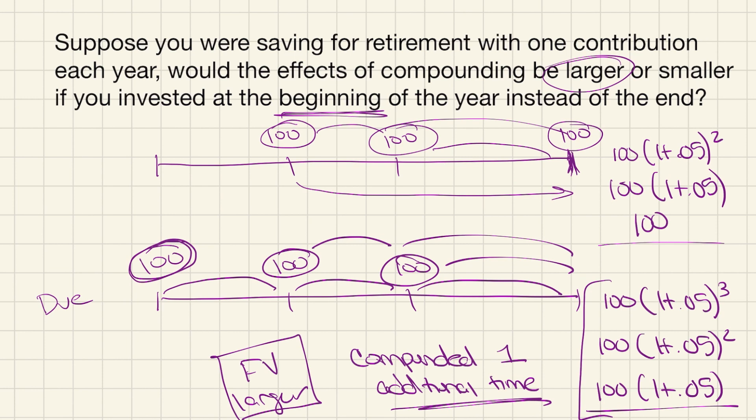So this was the derivation and the explanation behind the intuition for the future value of an annuity due. I also have a video for the present value of an annuity due, which I'll link here at the end of this video.